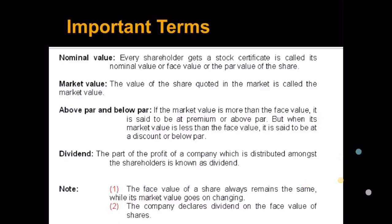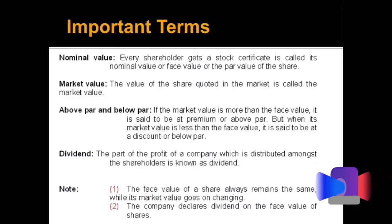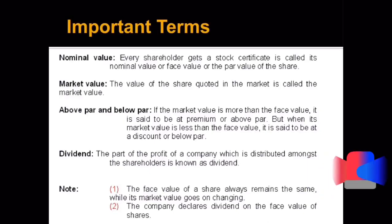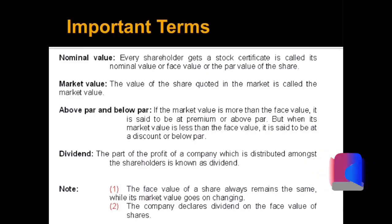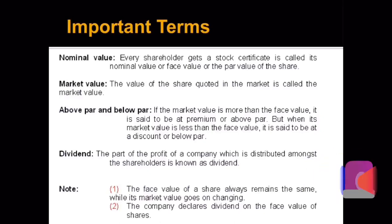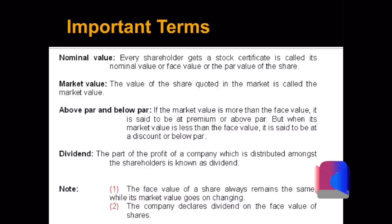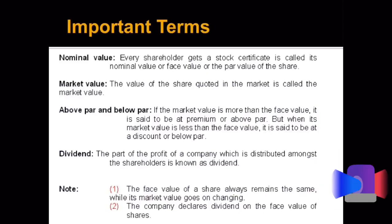So premium means higher than the face value, discount means lower than the face value, and at par means the market value and the face value are equal. Next is dividend. Dividend is basically a part of a profit which is distributed among the shareholders. It's a kind of return which the shareholder gets when he invests his money into the company. The rate could be 5 percent, 10 percent, 15 percent — it varies from question to question. The dividend depends upon the face value; though the market value may rise, fall, or remain at par, the dividend does not change. So if a share has a face value of rupees 100 and the rate of dividend is 12 percent, the person will get rupees 12 as dividend irrespective of market prices.